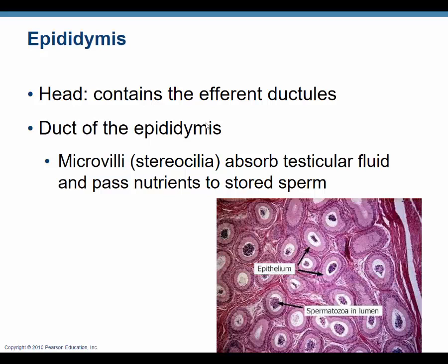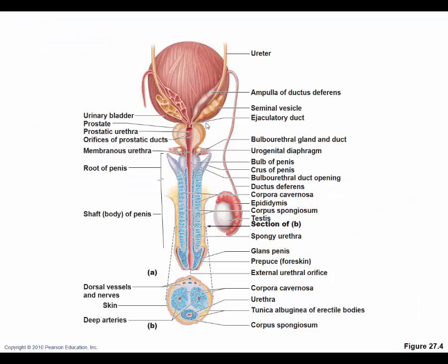The biggest function of the epididymis is storage — sperm are stored here after they're created. Fluid from the seminiferous tubules transports the sperm to the epididymis, where excess testicular fluid is absorbed and nutrients are passed to the sperm, allowing them to mature. They remain in the epididymis until ejaculation, specifically in the tail. Sperm gain their motility in the epididymis — prior to entering it, they can't travel up the reproductive tract yet.